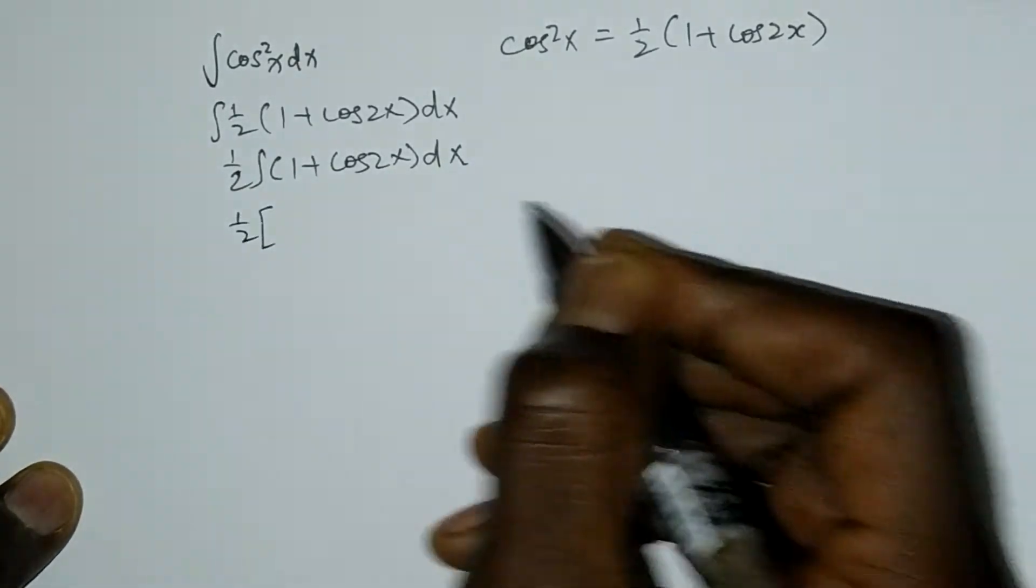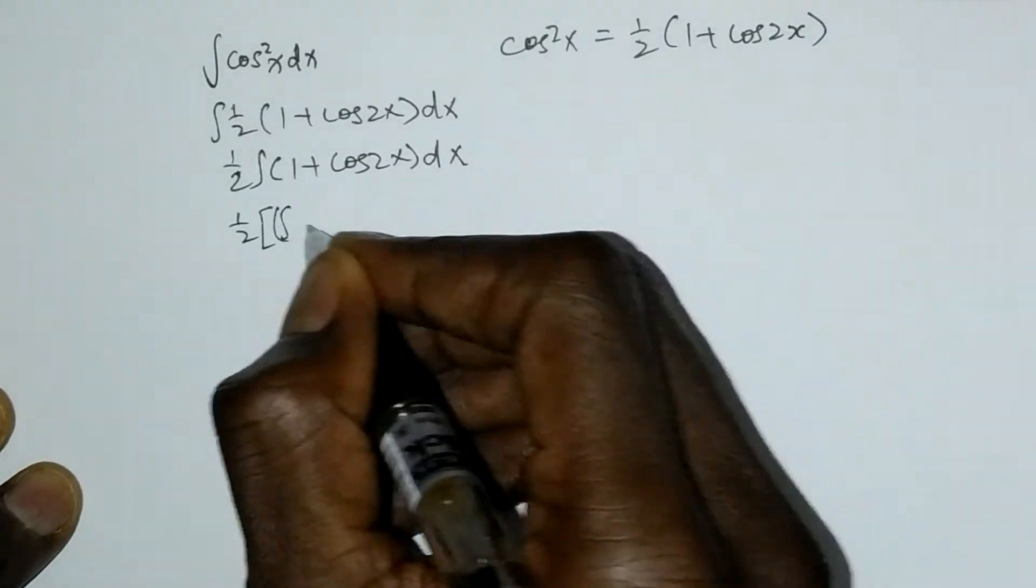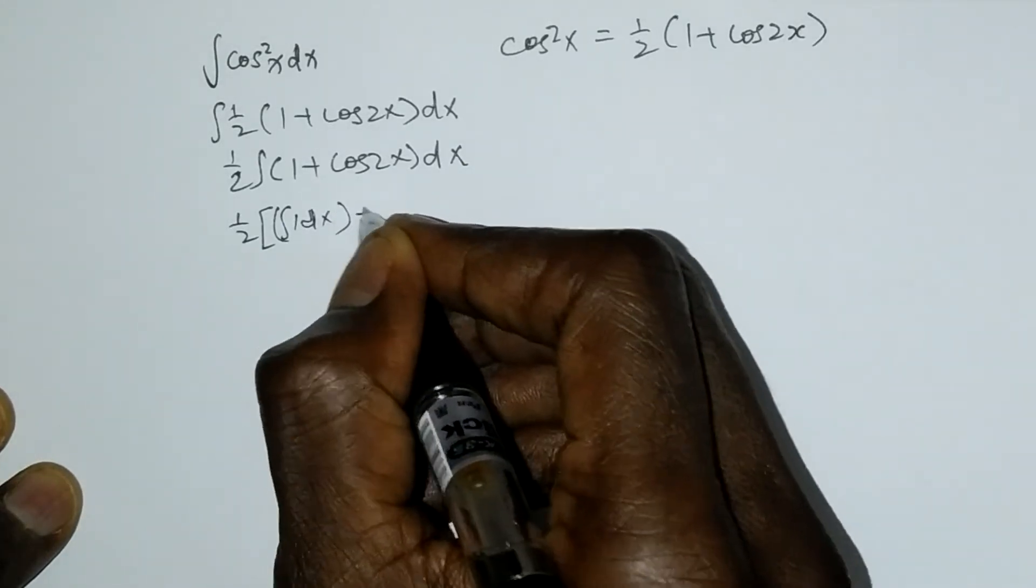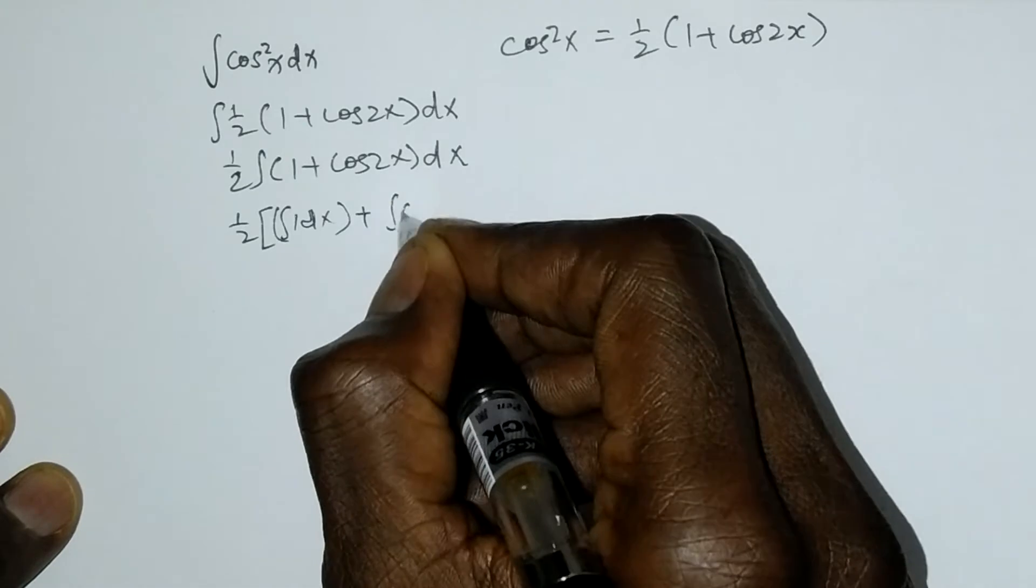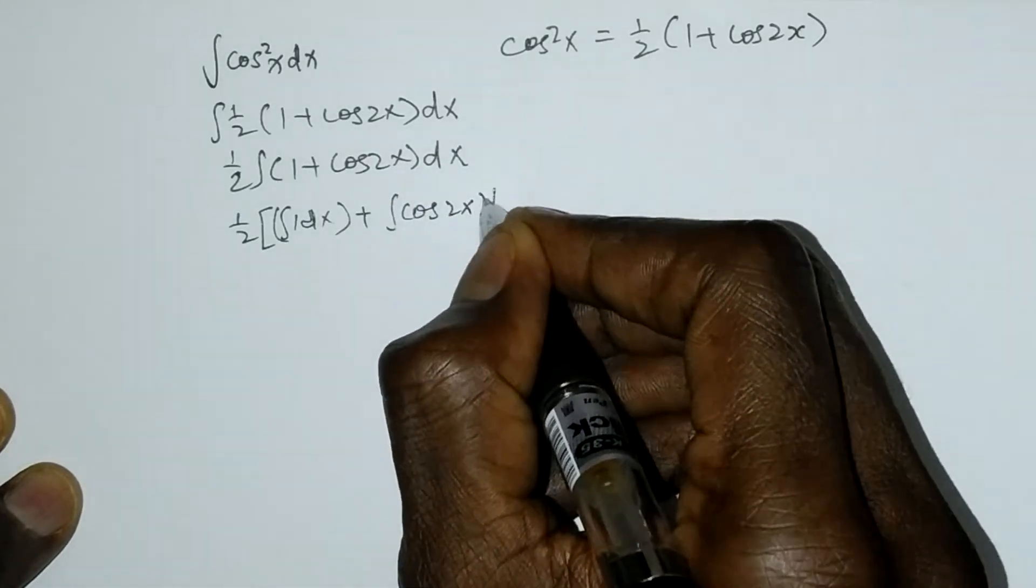You can write it like this: 1/2 of [integral of 1dx plus integral of cos2x dx].